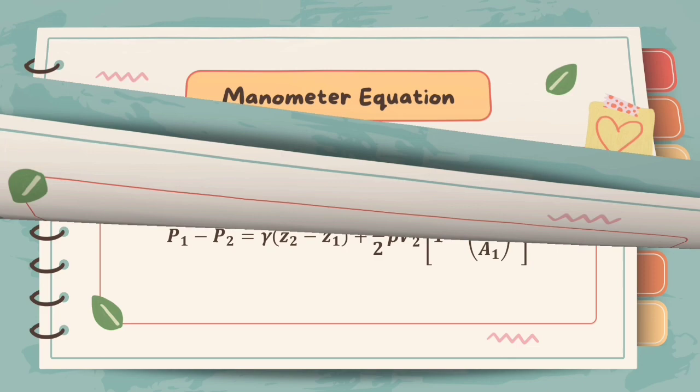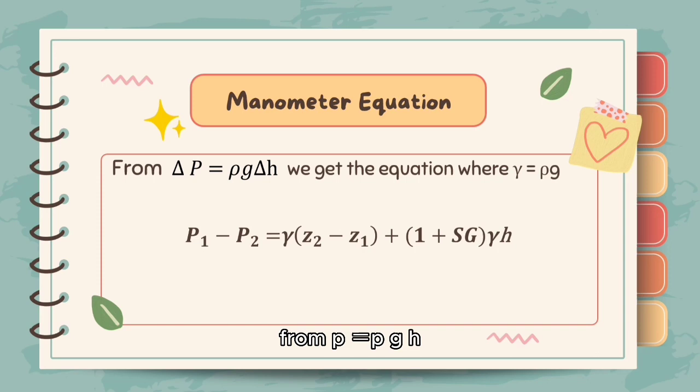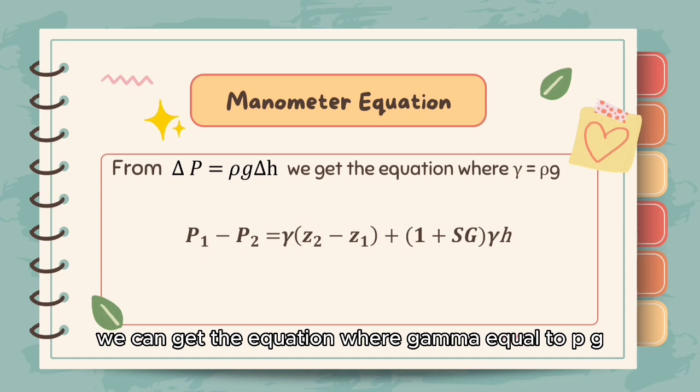Now we try to find out one more equation. From P equal to ρgh, we can get the equation where γ equal to ρg. And this equation I call as equation B.